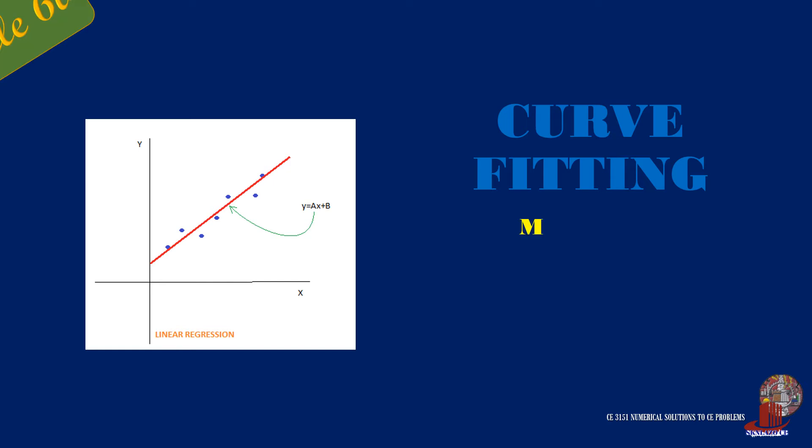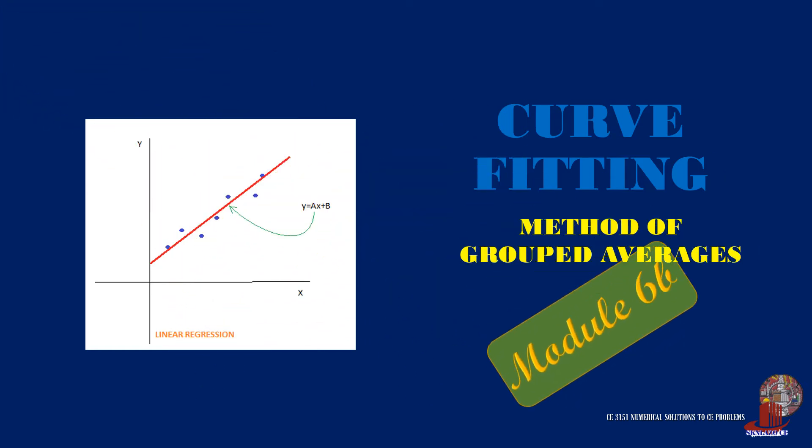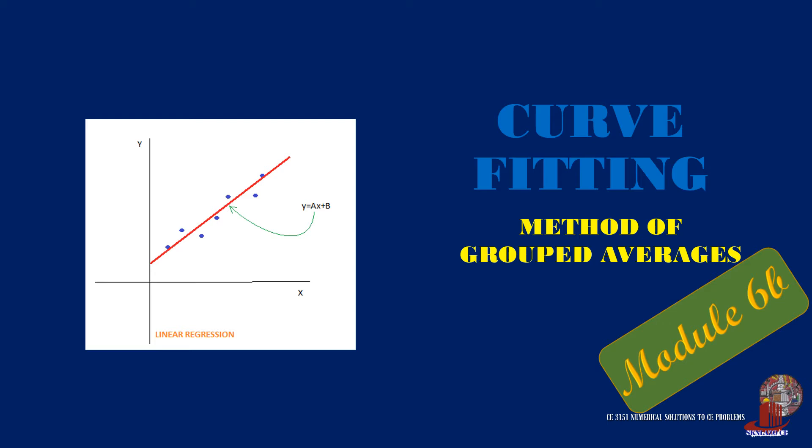A simple method of identifying the equation of the best fit line to distinguish the trend of specific data is the method of group averages. This is the first numerical method, although it is not as accurate as the other methods to be discussed in later videos.